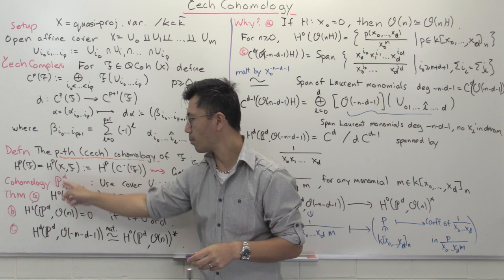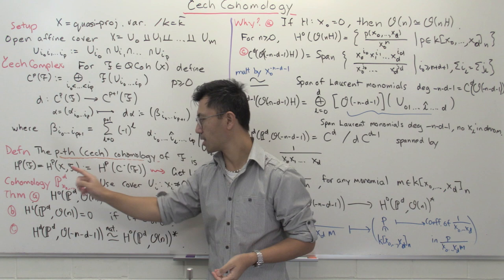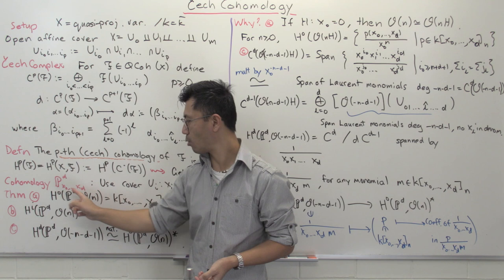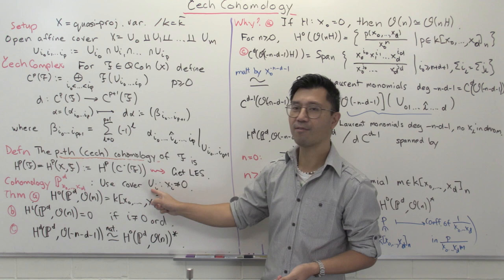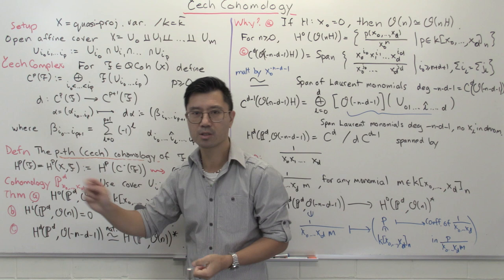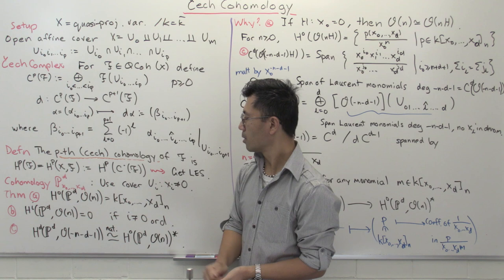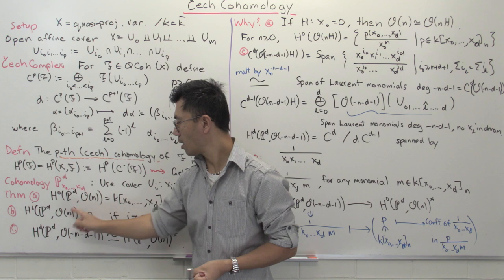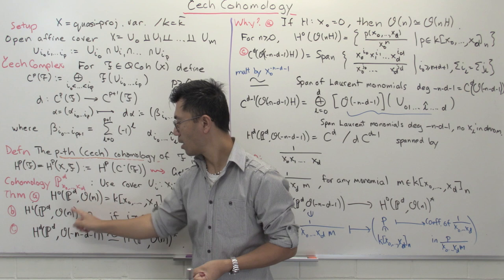We'll use the standard open affine cover. If we have coordinates x₀ up to xd on ℙᵈ, we look at the open sets Uᵢ where xᵢ is non-zero. The sheaves we want to study are the line bundles O(n) — these invertible sheaves. For H⁰, we can look at the homogeneous coordinate ring k[x₀, …, xd], the polynomial ring in d+1 variables, which is graded with each xᵢ having degree one. We look at the degree n part.